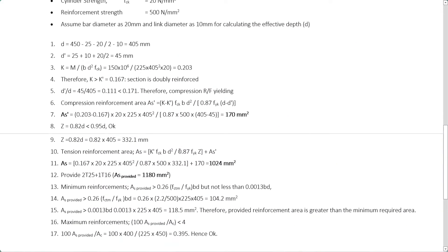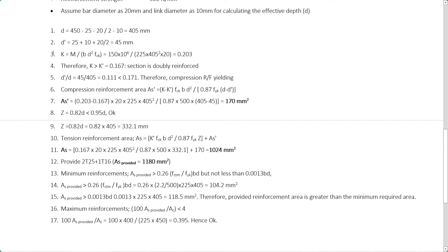To calculate the effective depth, we assume a bar diameter of 20mm. Effective depth D equals beam depth minus cover minus stirrup diameter minus half the bar diameter, giving D = 405mm. For D' — the depth to the compression reinforcement bar — knowing the cover and stirrup diameter and assuming a 20mm compression bar, we get D' = 45mm.